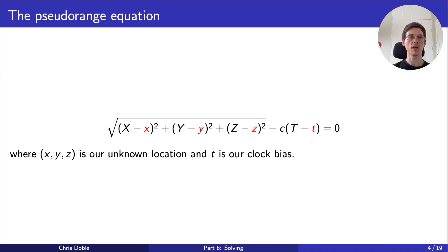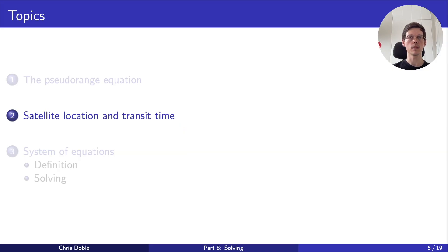But before we can do that, we need to calculate uppercase X, Y, Z, and T. In other words, the satellite's location and transit time. But that's a bit ambiguous. The satellite's location, when? And the transit time of which signal? Well, to be more specific, the signal we're interested in is the PRN code that we received most recently. We want to know where the satellite was when it finished transmitting that PRN code and how long it took to reach us.